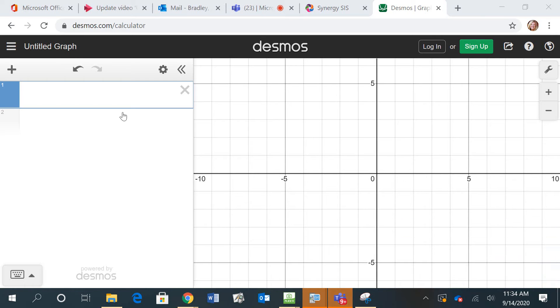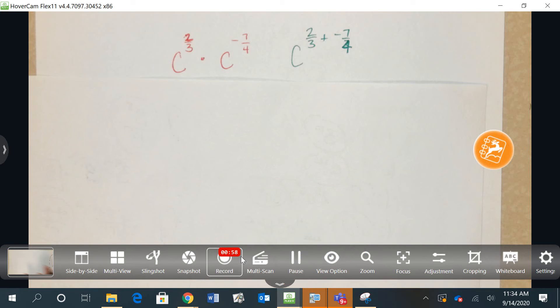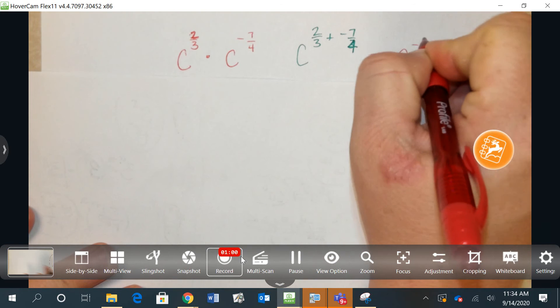So I'm going to start by putting them in parentheses: 2 thirds plus negative 7 fourths. I don't want to approximate, it's not asking me to round. I want an exact number, so I can hit this little fraction key. Negative 13 twelfths. I'm going to come back to my picture. This is negative 13 twelfths.